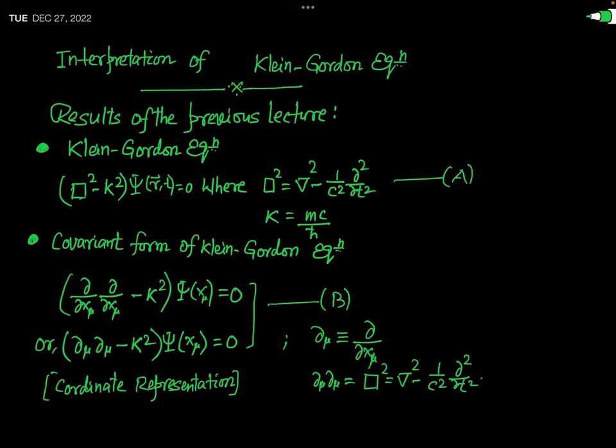This is the second part of the lecture on the Klein-Gordon equation. I would like to remind you what you learned in the previous lecture. As information, I have written the KG equation in both covariant and non-covariant form. Basically, we obtained that the KG equation is written as the D'Alembertian operator minus k-squared, times ψ(R,T), equal to zero.